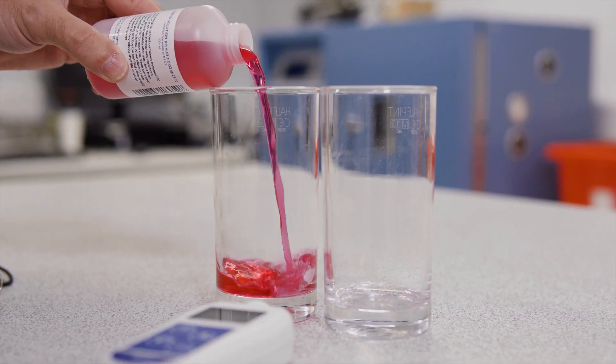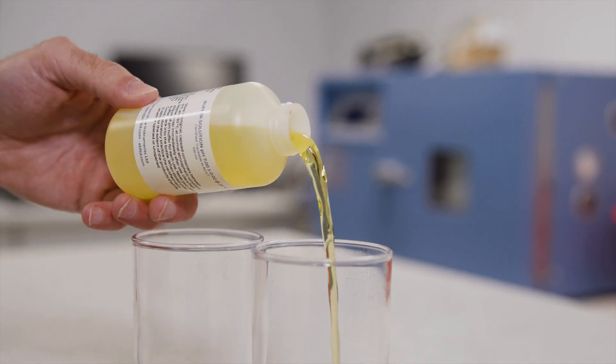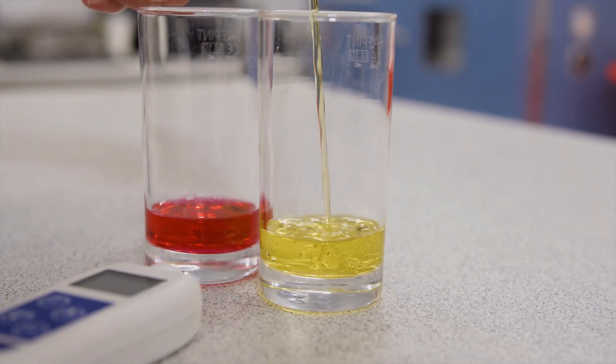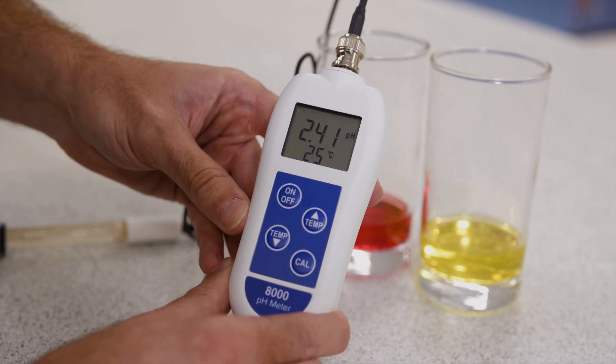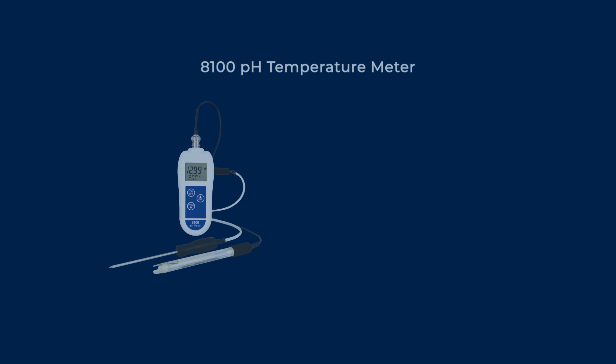Another accuracy feature that some meters have is automatic or manual temperature compensation. The change in temperature impacts pH readings, but it doesn't necessarily mean that the solution has become more alkaline or acidic.